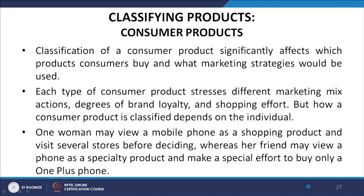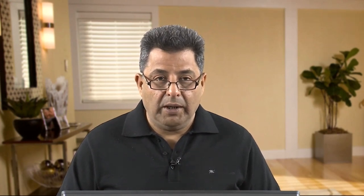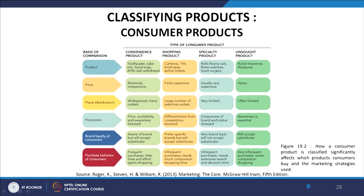This classification of consumer products significantly affects which products consumers buy and what marketing strategies would be used. Each type stresses different marketing mix actions, degrees of brand loyalty, and shopping efforts. How a consumer product is classified depends on the individual — one woman may view a mobile phone as a shopping product and visit several stores before deciding, whereas her friend may view it as a specialty product and make a special effort to buy only a OnePlus phone.